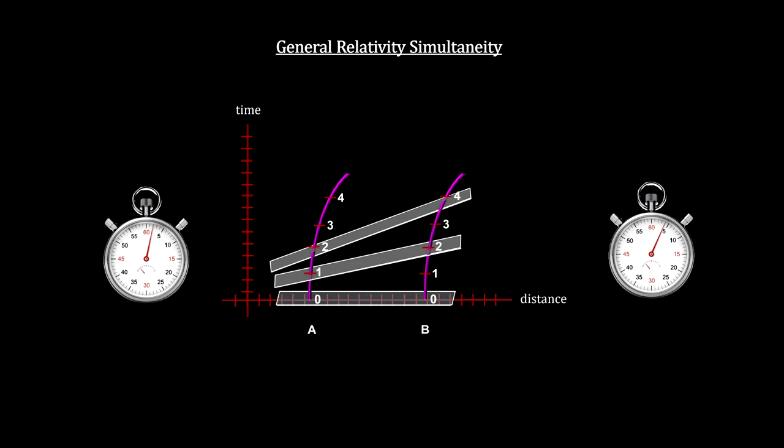The equivalence principle tells us the same thing will happen near a massive body. Gravity slows down time. Newton's gravitation has no such implication.